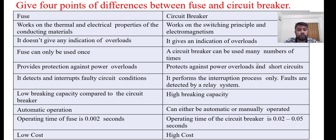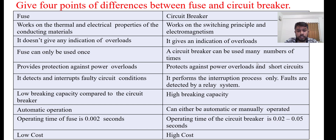The operating time of fuse is very low, whereas the operating time of a circuit breaker can be 0.02 seconds to 0.05 seconds. The operating time of both fuse as well as circuit breaker can be changed, and the operating value of the time of fuse can be dependent on certain conditions.